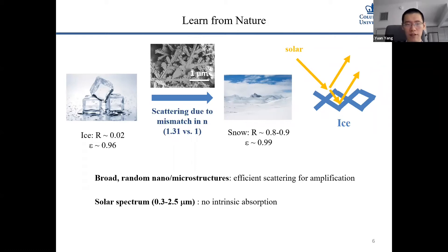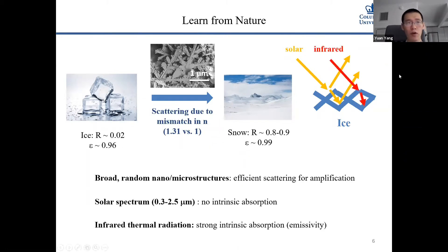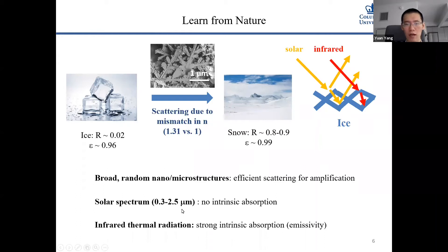At the same time, in the infrared part, ice is absorptive, so scattering actually enhances the absorption. You can see that the thermal emittance of snow is also slightly higher than ice itself. The important requirements are: first, you need nano/microstructures to efficiently scatter light; second, you need intrinsic transparency in the solar spectrum; and third, strong absorption in the infrared part. We cannot use ice as a paint because it melts at zero degrees Celsius.